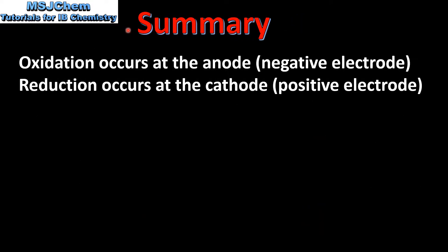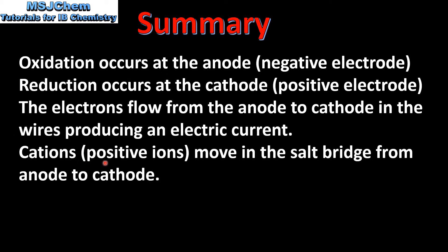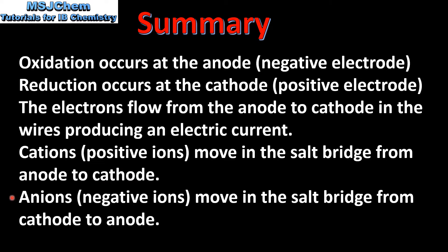Let's end with a summary. In a voltaic cell, oxidation occurs at the anode which is the negative electrode, and reduction occurs at the cathode which is the positive electrode. The electrons flow from the anode to cathode in the wires, producing an electric current. Cations, which are positive ions, move in the salt bridge from the anode to the cathode. Anions, which are negative ions, move in the salt bridge from the cathode to the anode.